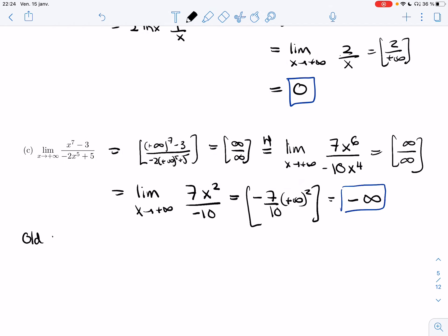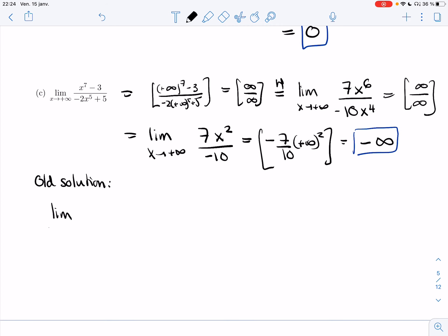All right. Let's look at the old solution. All right. So we've seen some like this in Chapter 1, but you've seen some in Cal 1 as well. My trick is to factor the biggest power of the denominator. And so in this case, I'm going to factor x to the 5.